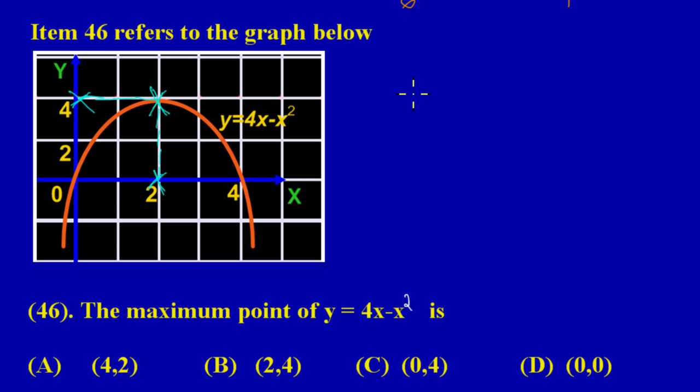So really the coordinate for my maximum point is the value of x is 2 and the value of y is 4. So I'm just looking for the option that best suits that, 2, 4, and obviously that would be B. So my friends, it's really that easy.